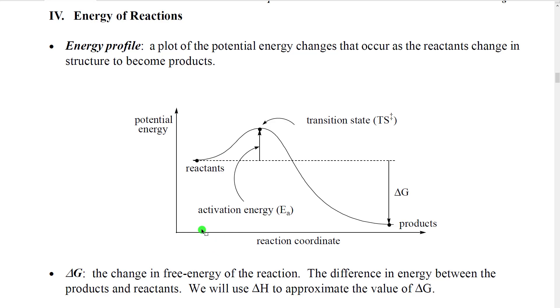We call this axis the reaction coordinate, but what it really represents is there's a structure here, there's a structure there, there's a structure there. It's all of the individual little infinitesimally different structures that occur as we slowly change that reactant structure into the products.